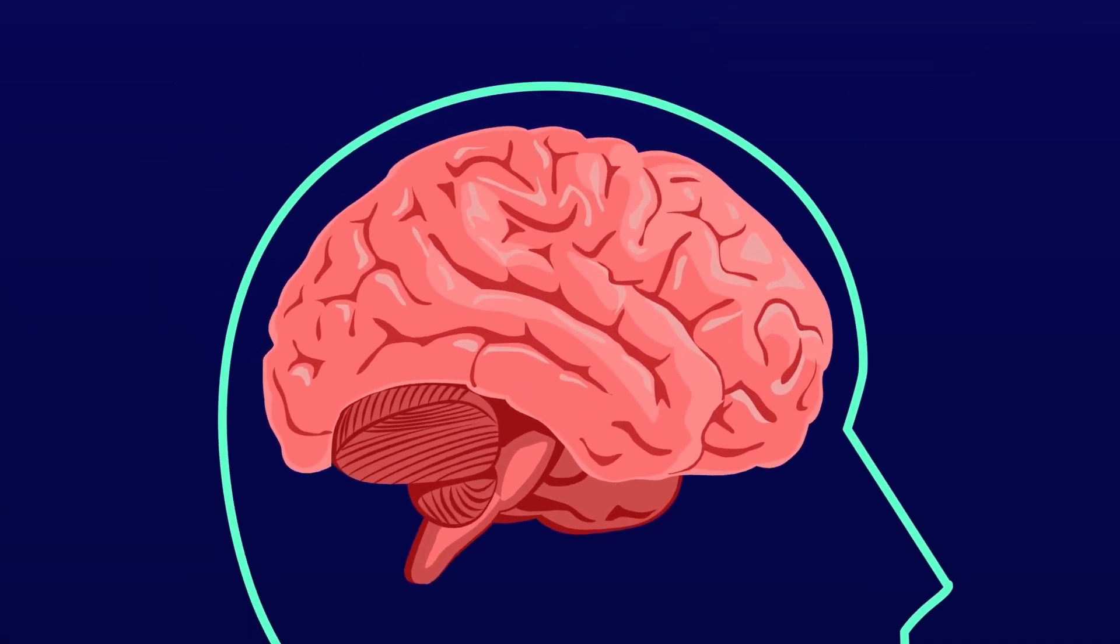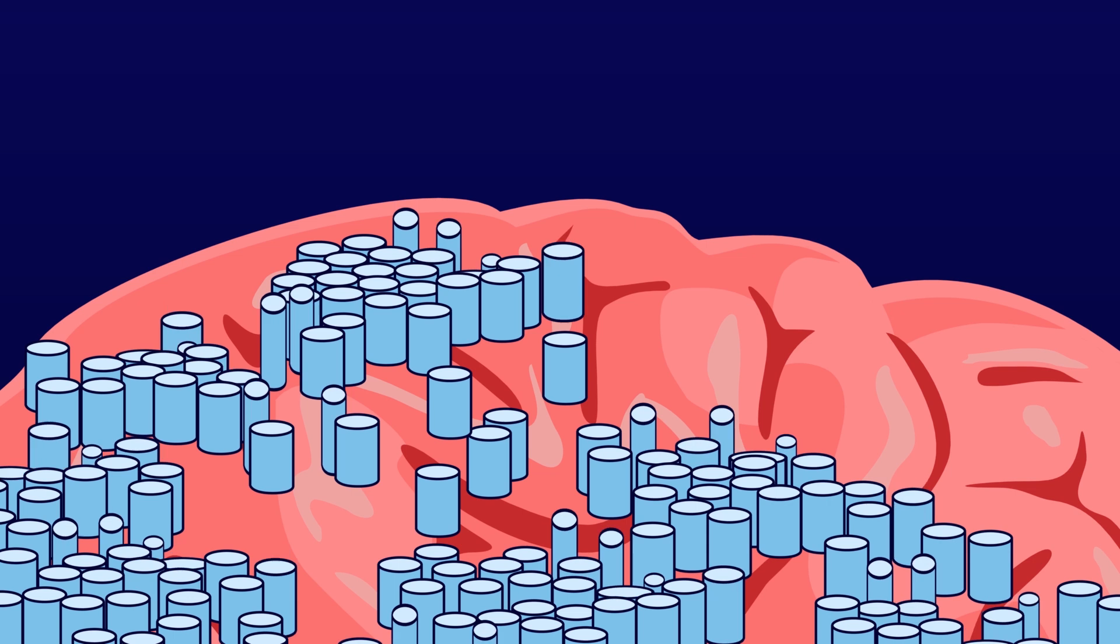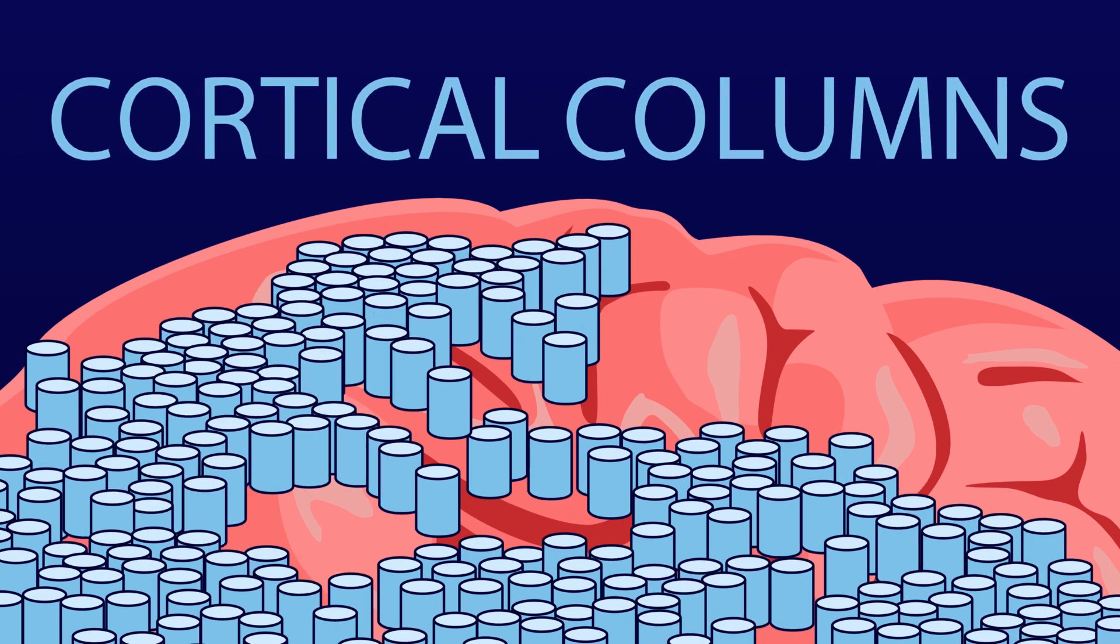But when we look at the neocortex, it is composed of about 150,000 units called cortical columns, each about the size of a grain of rice. We now believe that each column independently creates models based on what it's sensing.